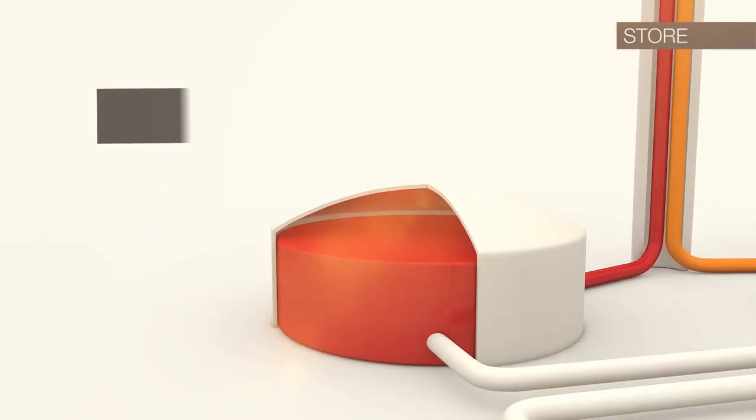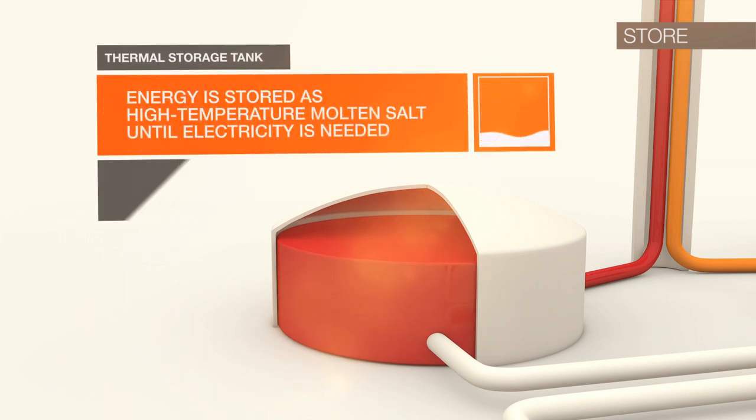After passing through the receiver, the molten salt then flows down the piping inside the tower and into a thermal storage tank where the energy is stored as high temperature molten salt until electricity is needed.